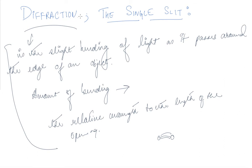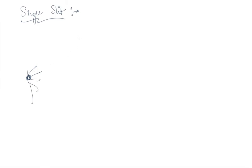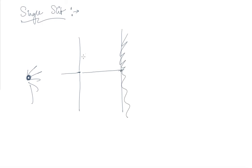Now let's talk about how the single slit experiment demonstrates diffraction. When we talk about the single slit, from a source emitting light, we take a screen and keep just one source. If light were not a wave, we should observe a single point of light on the screen.